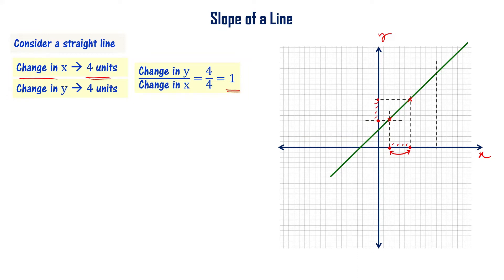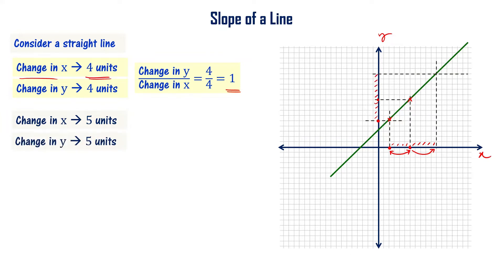Now let me try another point. Change in x is 5 units and change in y is 5 units. So change in y divided by change in x is 5 by 5, that is equal to 1. Both times it is giving 1.